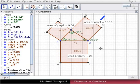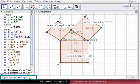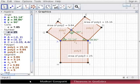Now we will check if area of poly 1 plus area of poly 2 is equal to area of poly 3. In the input bar type poly 1 plus poly 2 and press enter. In the algebra view, a number D shows the value of area of poly 3. Hence the Pythagoras theorem has been proved.